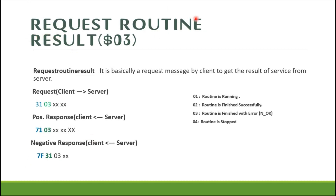The Request Routine Result sub-function ID is 03. The tester uses this when it wants to know the result of a particular active routine. Here you can see the request from client to server: 0x31, 0x03, followed by the two-byte RID. DCM validates the preconditions, then checks the module to determine whether the routine is running, finished successfully, or finished with error.